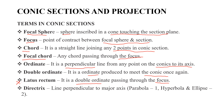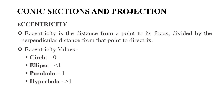The next term is the directrix. The directrix is the line perpendicular to the major axis. Eccentricity is the distance from a point to the focus divided by the perpendicular distance from the point to the directrix.